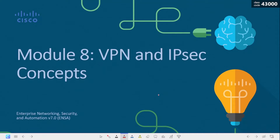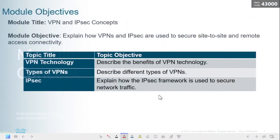Module 8: VPN and IPC concepts. In virtual private networks, to secure network traffic between sites and users, organizations use virtual private networks, or VPNs, to create end-to-end private network connections. A VPN is virtual in that it carries information within a private network, but that information is actually transported over a public network. In this module, we focus on VPN technology, types of VPNs, and IP security.